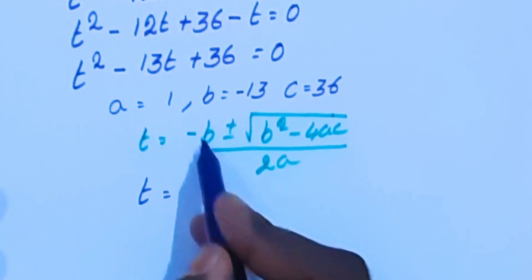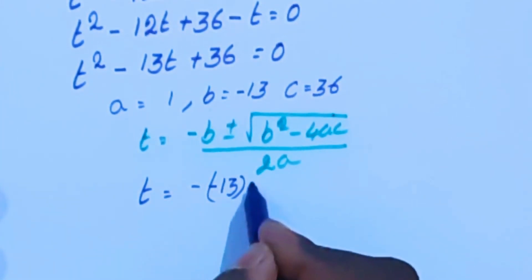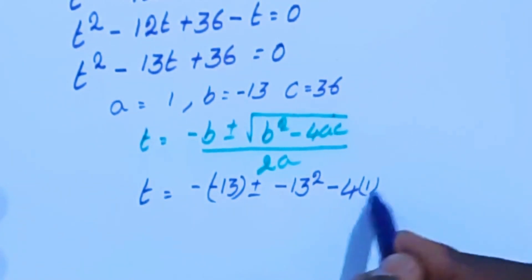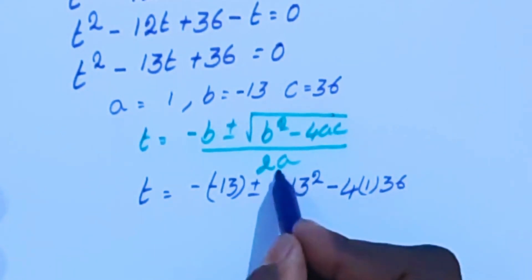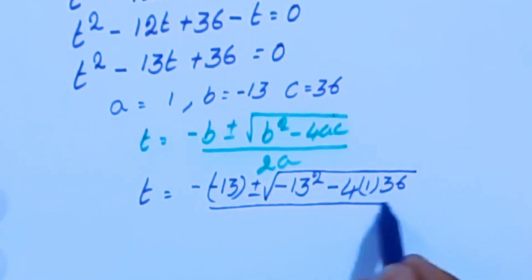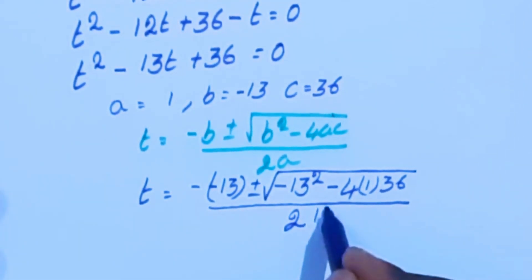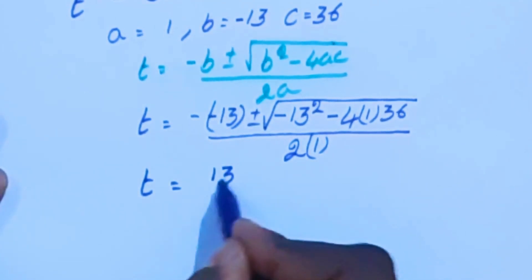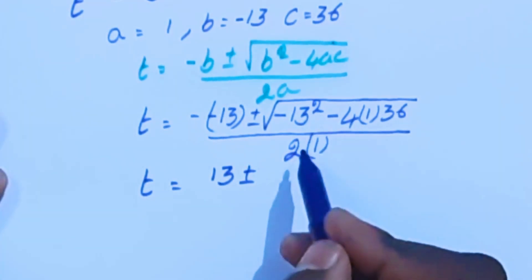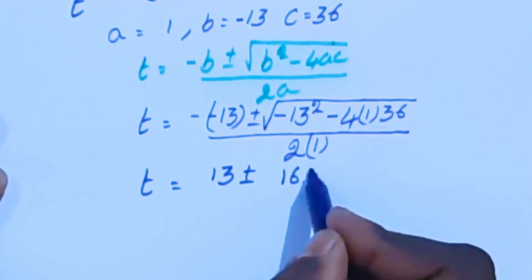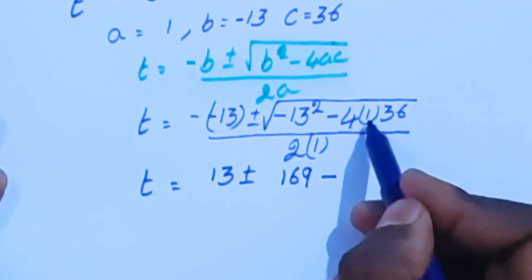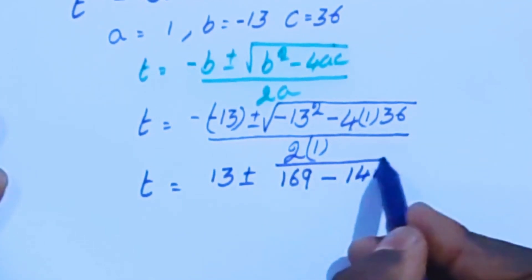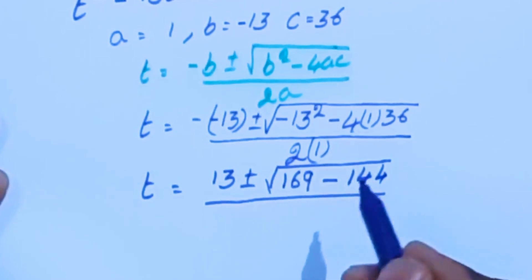Substituting the values: t equals minus (minus 13) plus or minus square root of (minus 13 squared minus 4 times 1 times 36), divided by 2 times 1. So t equals 13 plus or minus square root of (169 minus 144), divided by 2.